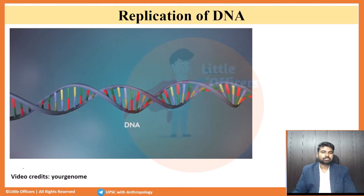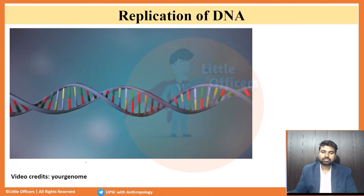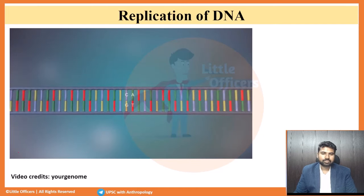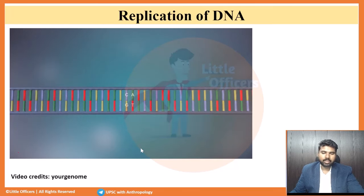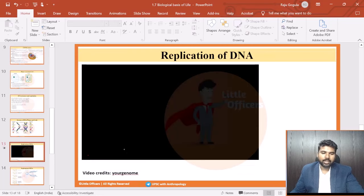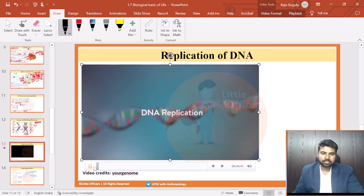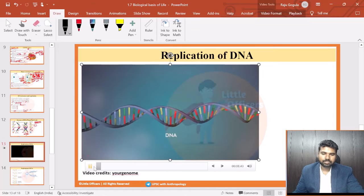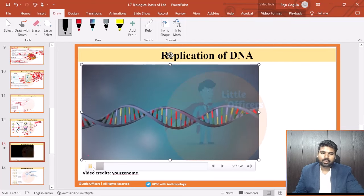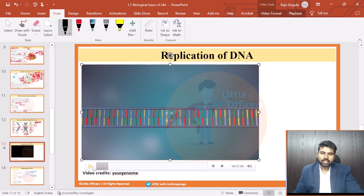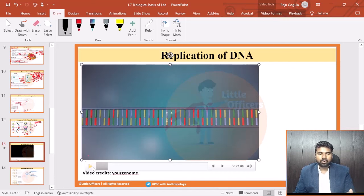DNA is a molecule made up of two strands twisted around each other in a double helix shape. Each strand is made up of a sequence of four chemical bases, represented by the letters A, C, G, and T. These are the base pairs that we are talking about - adenine, thymine, guanine, and cytosine. And they are complementary. They have also given colors in this 3D model - red, yellow, blue, and green.